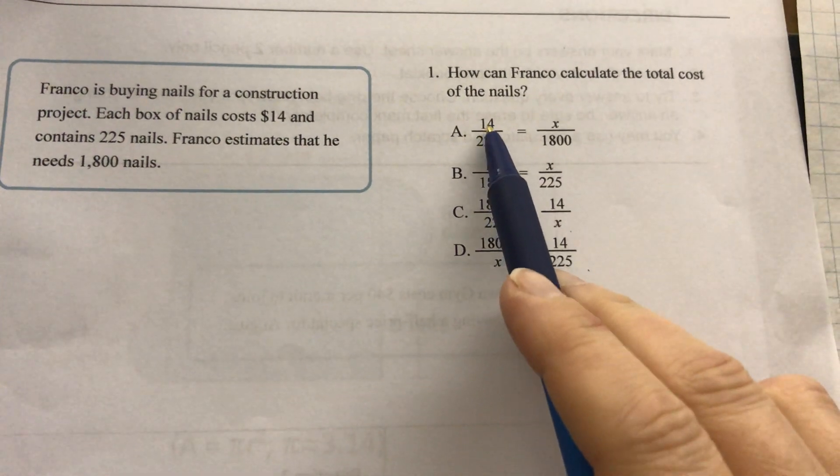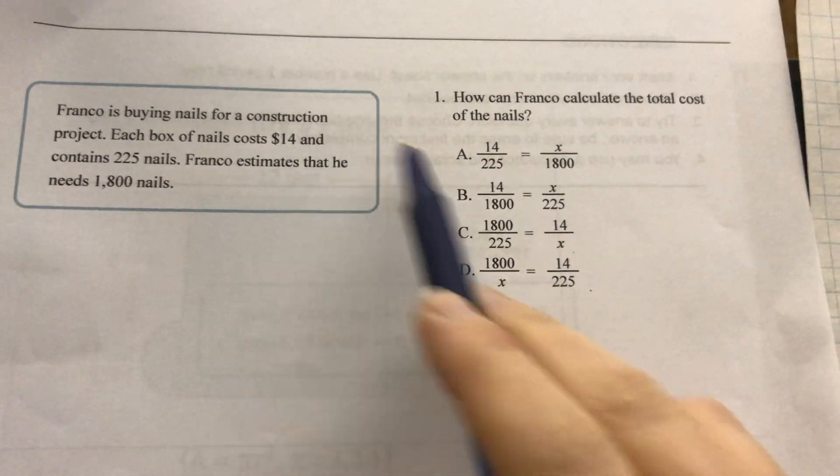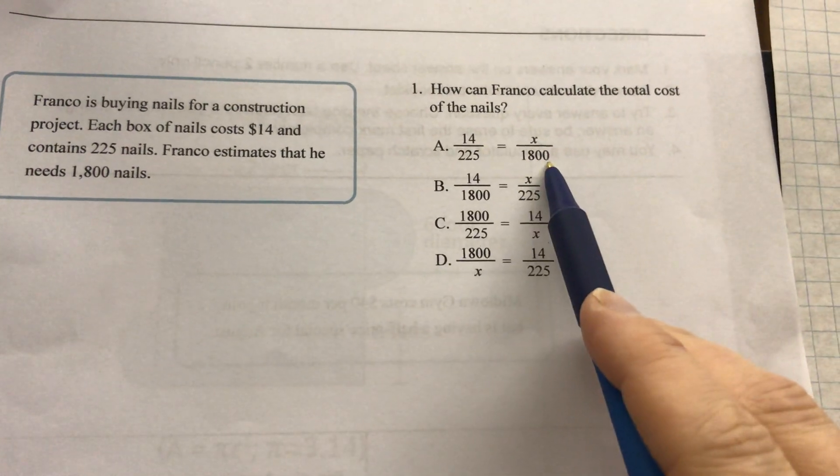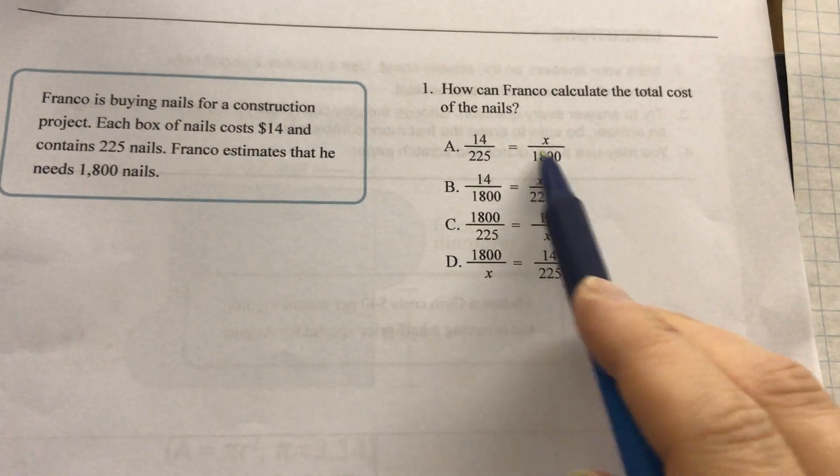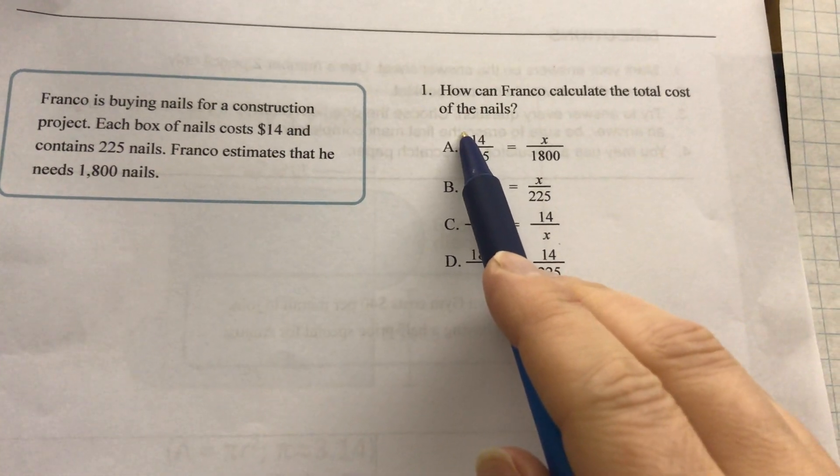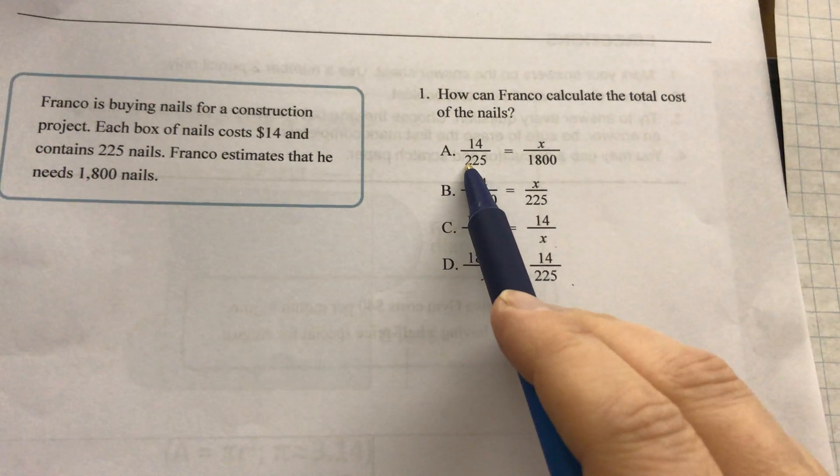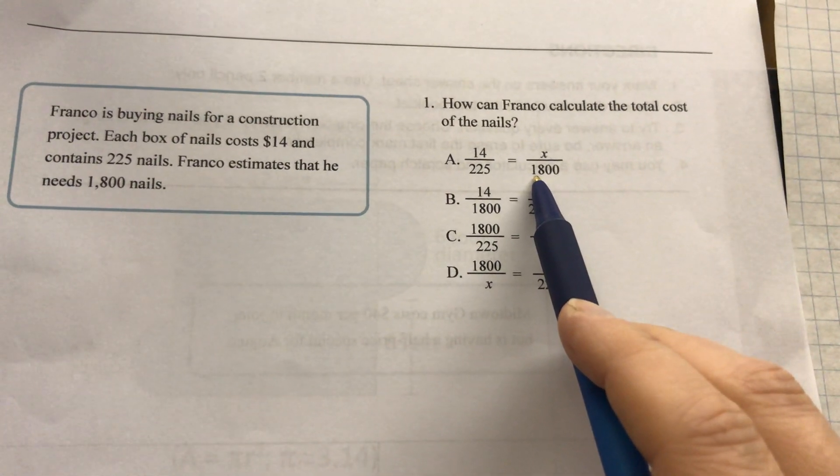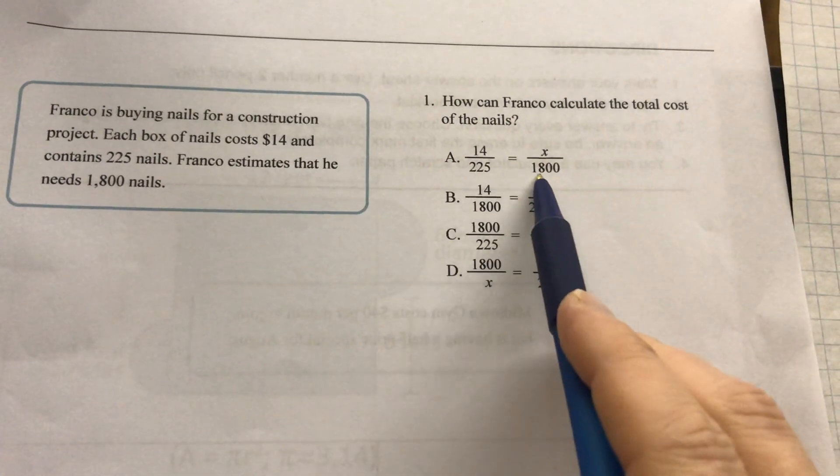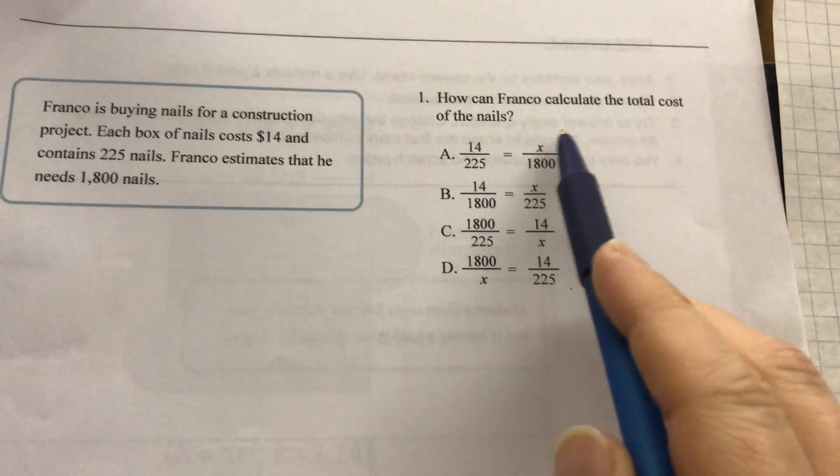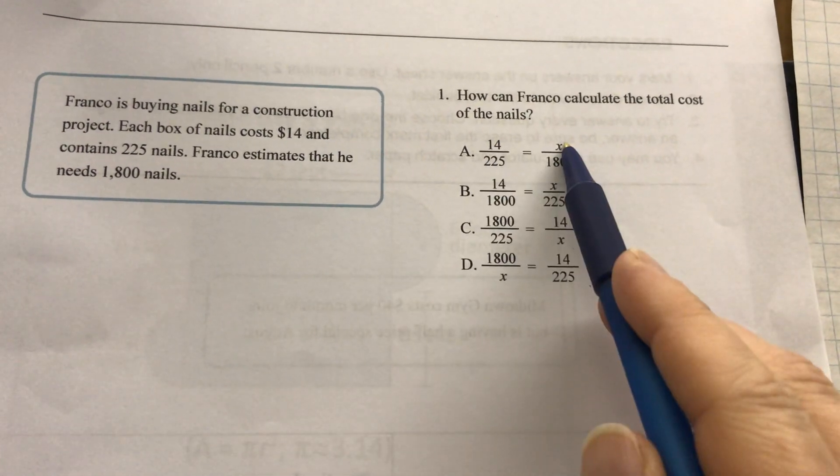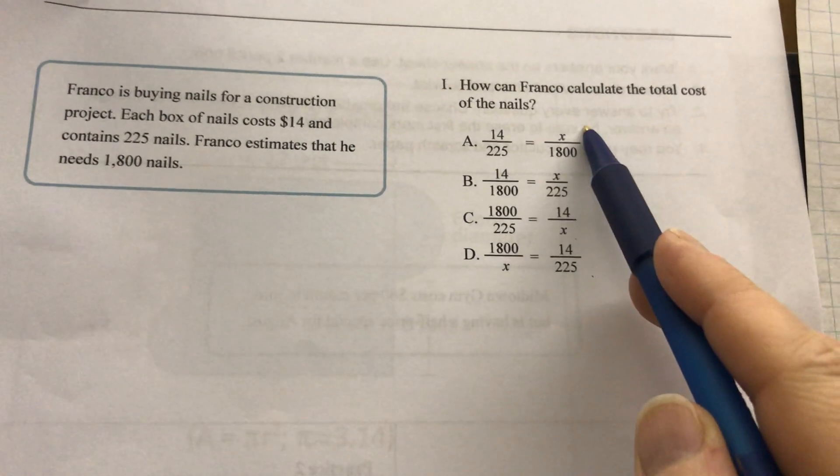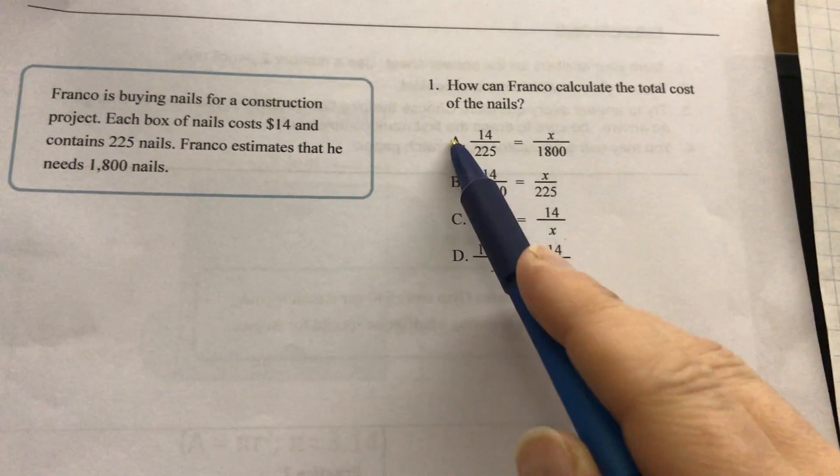So now let's take a look. 14 dollars for 225 nails. So dollars is going to be at the top and nails is going to be at the bottom. And this has to be the same for both of my fractions, for both of my proportions. So $14 I can buy 225 nails. How many dollars is it to buy 1,800 nails? Is that what I want to find out? He estimates that he needs 1,800 nails. So I know nails is on the bottom, and I want to find the total cost, so that's how much in dollars. So yes, I would choose A here. It's $14 for 225 nails, how many dollars is it for 1,800 nails? So A would be my answer.